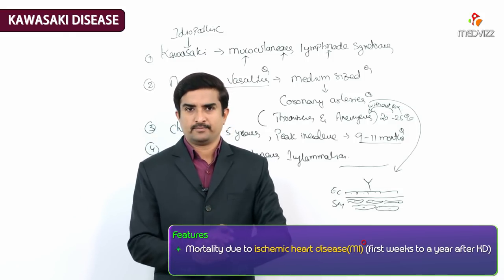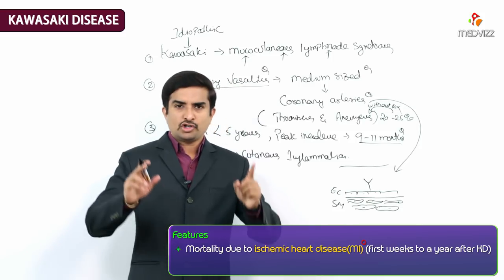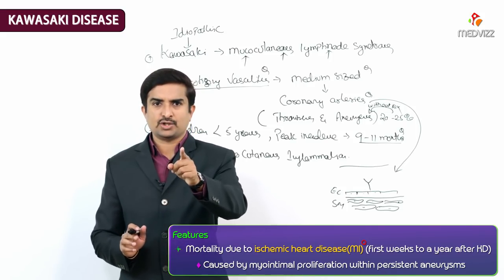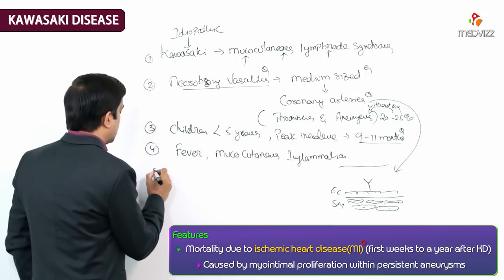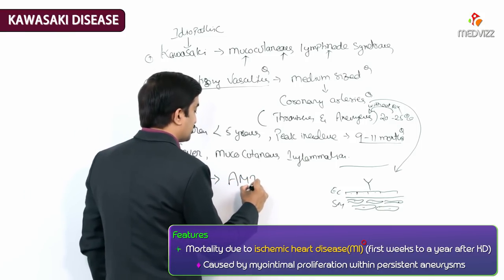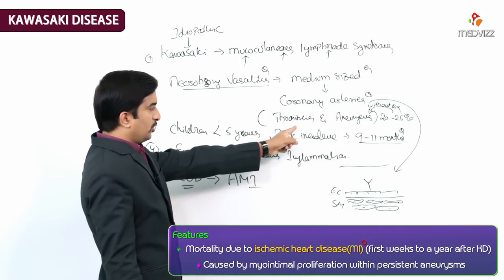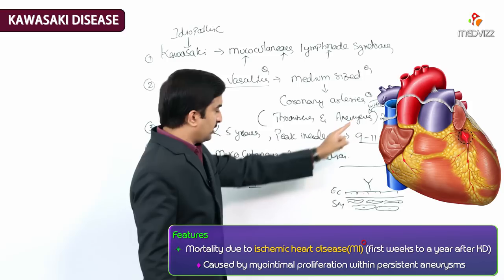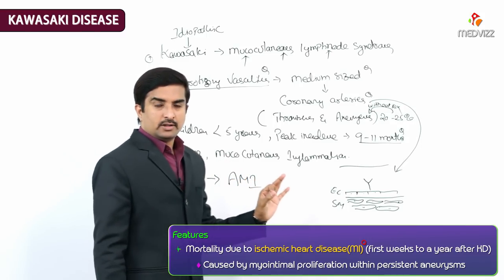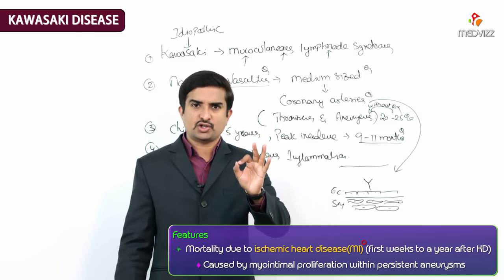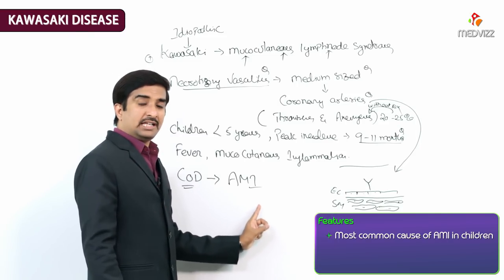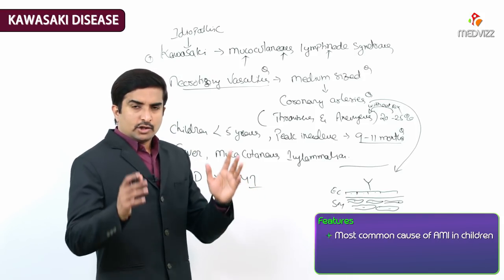Mortality most often occurs within the first weeks to a year after Kawasaki disease, mainly due to ischemic heart disease. The cause of death in Kawasaki is acute myocardial infarction, mainly because of extensive coronary artery thrombosis. Aneurysms may rupture and cause acute myocardial infarction, making ischemic heart disease the leading cause of death.